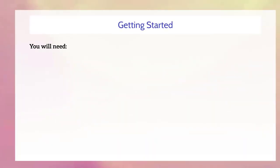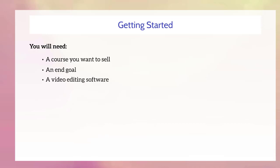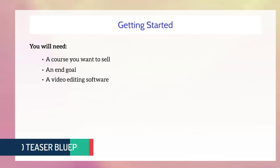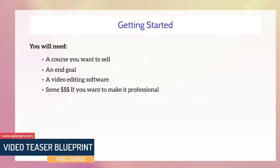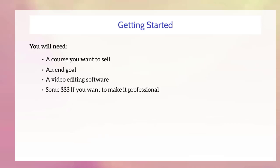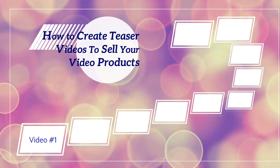Let's talk about getting started, the tools, and what you'll need. You'll need a video course you want to sell and an end goal — what action you desire the person to take. If you don't know what that looks like, don't worry; it will become clearer as you go through the course. You'll also need video editing software, which we'll cover in video number eight. And you'll need some money if you want to take it to the next level and make it professional, though that's not necessarily required. With that said, let's move on to video number two.